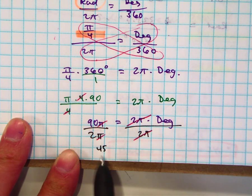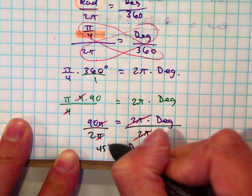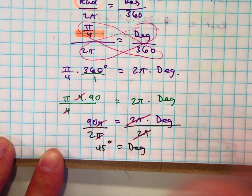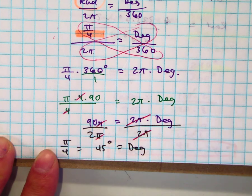Now, remember, this is not radians anymore. Not just because you cancel the π's, but it's telling you degrees. Our degrees are equal to 45 degrees. π over 4 is equal to 45 degrees.